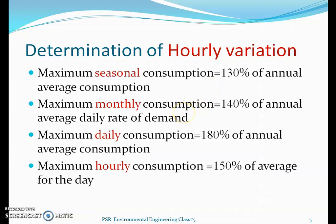From practice, the maximum seasonal consumption is 130% of the annual average consumption. Monthly consumption is 140% of the annual average daily rate of demand. Maximum daily consumption is 180% of the annual average consumption. Hourly consumption is 150% of the average for that particular day. These daily, monthly, and seasonal variations depend on the annual average consumption.